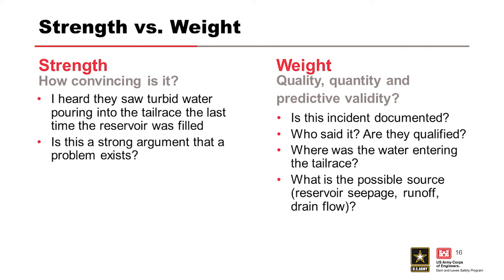All final probabilities are estimated using team elicitation procedures based upon the totality and strength of the evidence. In most cases, the evidence will be more heavily weighted to one side or the other, but one factor may be given much more weight than a large number of factors on the other side. For example, a statement about turbid water is pretty strong and raises the possibility that internal erosion initiated at some reservoir level; however, it could carry very little weight until it's confirmed and key questions are answered.